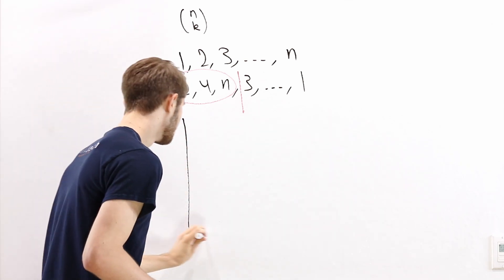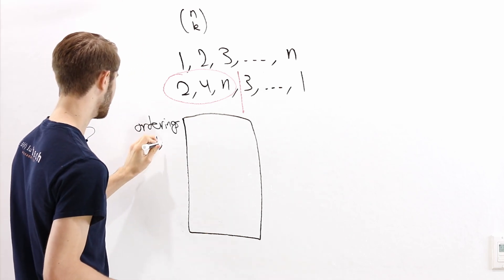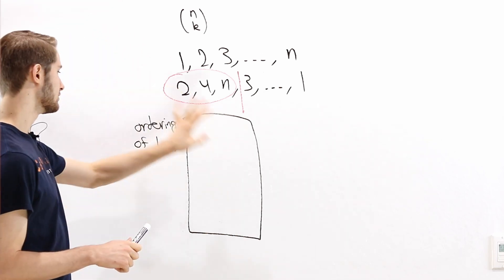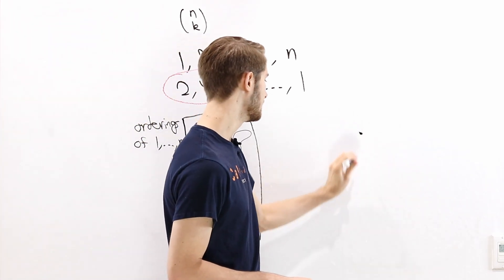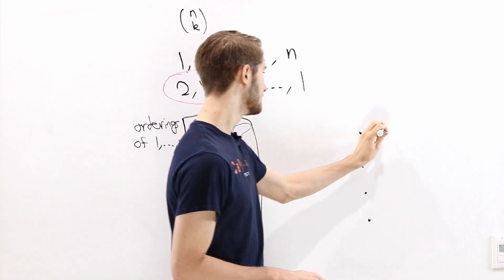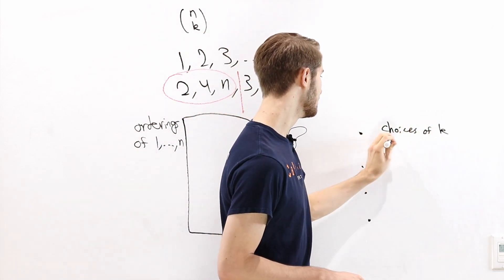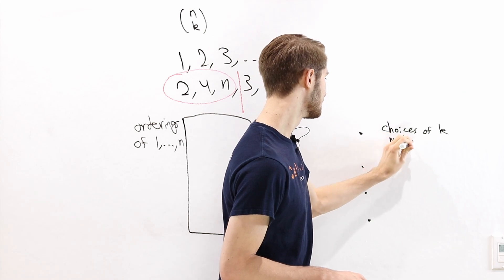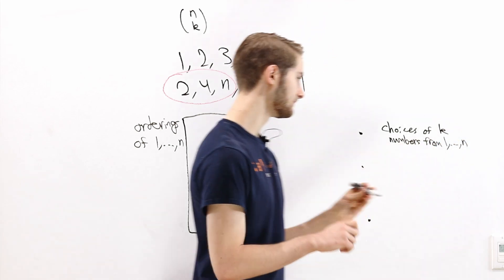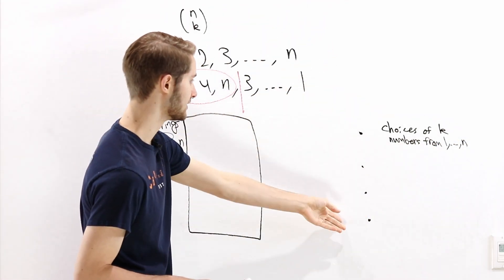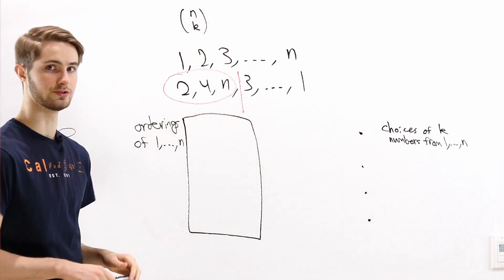Similarly, if we have any choice of k numbers out of n, we can put those k numbers at the front of a list, and then that ordering gives us the choice of k numbers that we want. So if we started with the choice 2, 4, n, we could get an ordering by putting 2, 4, n at the start, and then whatever we want at the end — it doesn't really matter because it's just the start that we care about. So we can get every choice of k numbers from some ordering of 1 to n. The number of dots over here is the number of choices of k numbers from 1 to n, which is n choose k.